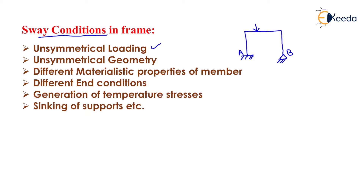The second condition is unsymmetrical geometry. If we assign a moment of inertia of 2I to column AC and I to column BD, then due to the thinner section at the BD portion, the frame will deflect in the rightward direction. The third condition is different material properties of the members. If we provide different types of material in the structure, the structure will undergo sway.